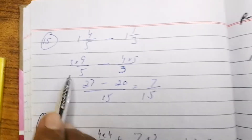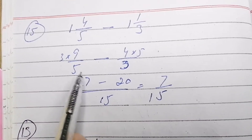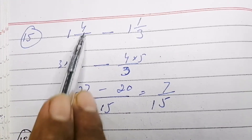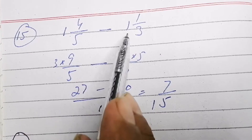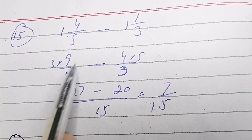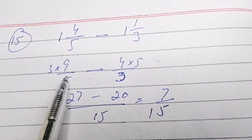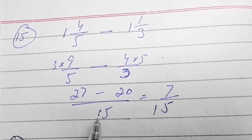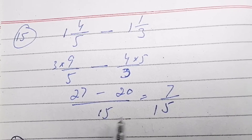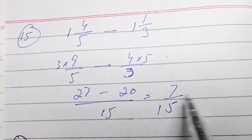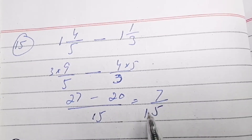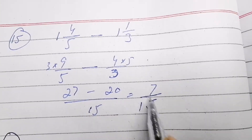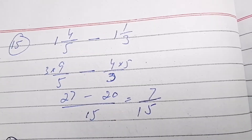Question 15: 1 whole 4 over 5 minus 1 whole 1 over 3. Change these into improper fractions, find the LCM, and solve. The answer is 7 over 15.